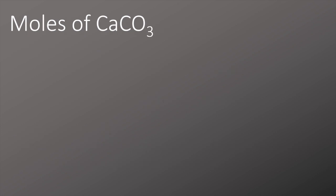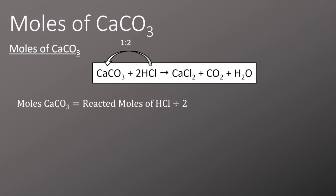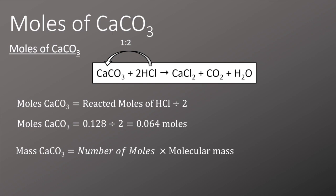Now we have the moles of reacted hydrochloric acid, we need to work out the moles of calcium carbonate that reacted with it. Looking at the chemical equation, two moles of hydrochloric acid react with every one mole of calcium carbonate. So we take the reacted moles of HCl and divide by two, giving us 0.064 moles of calcium carbonate. We then convert this to a mass by multiplying by its molecular mass of 100, giving us 6.4 grams.